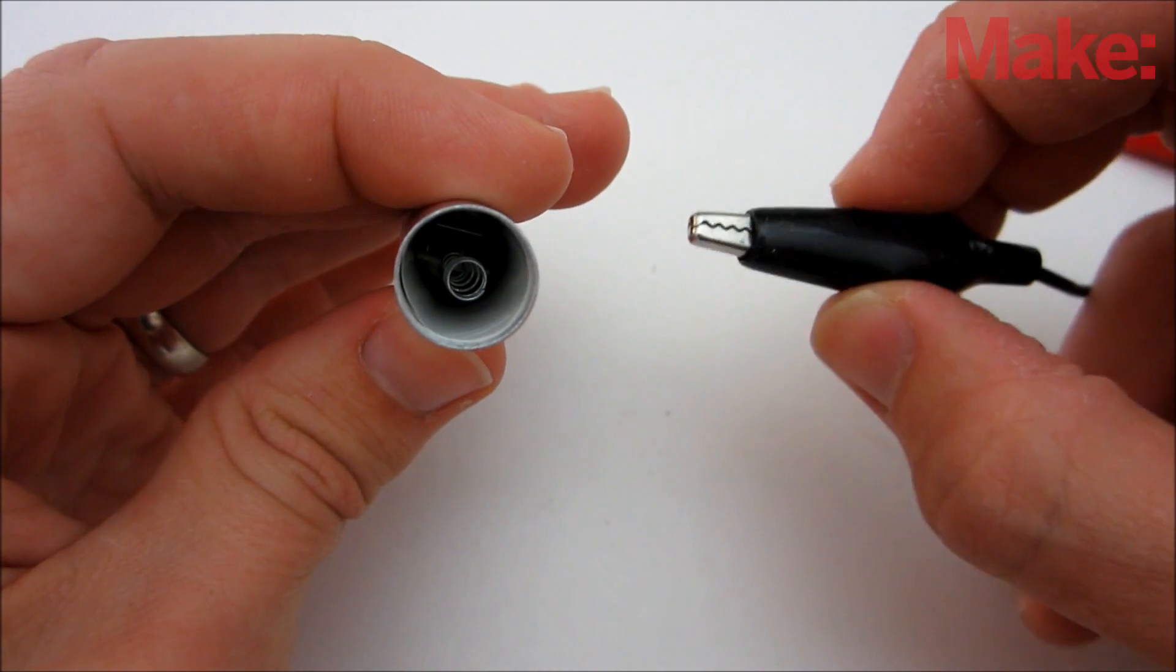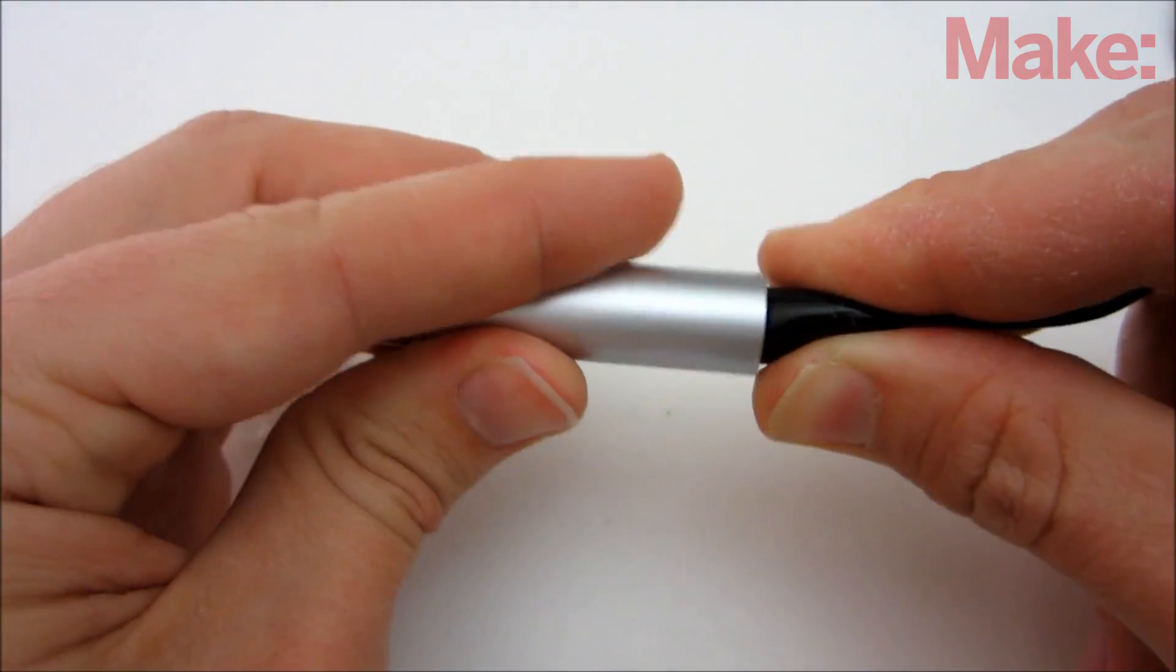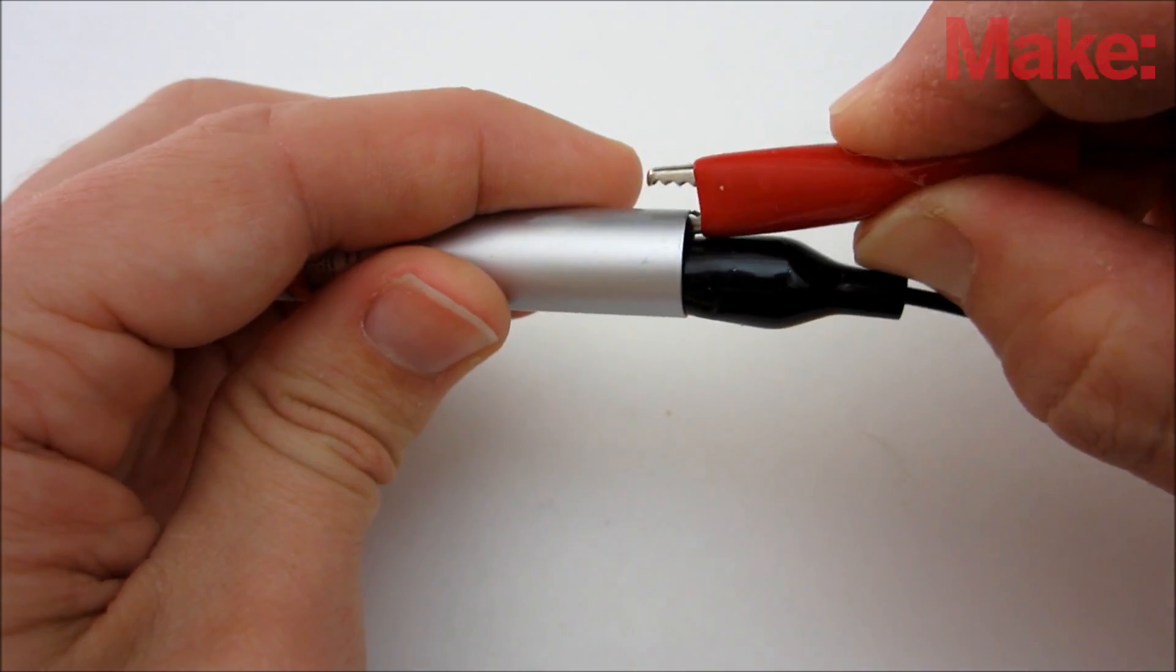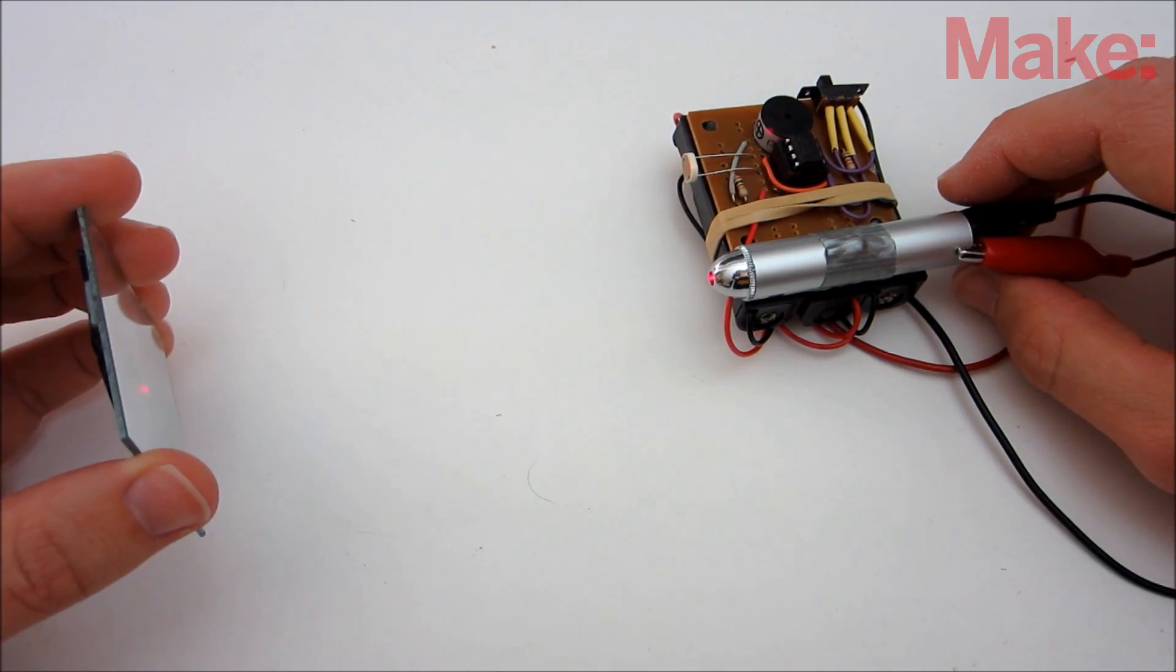Because they both run on 4.5 volts, all you need to do is use some alligator clips to connect the spring inside the laser pointer to the negative terminal of the battery pack, and connect the barrel of the laser pointer to the positive terminal of the battery pack. Then mount the laser pointer to the circuit board.